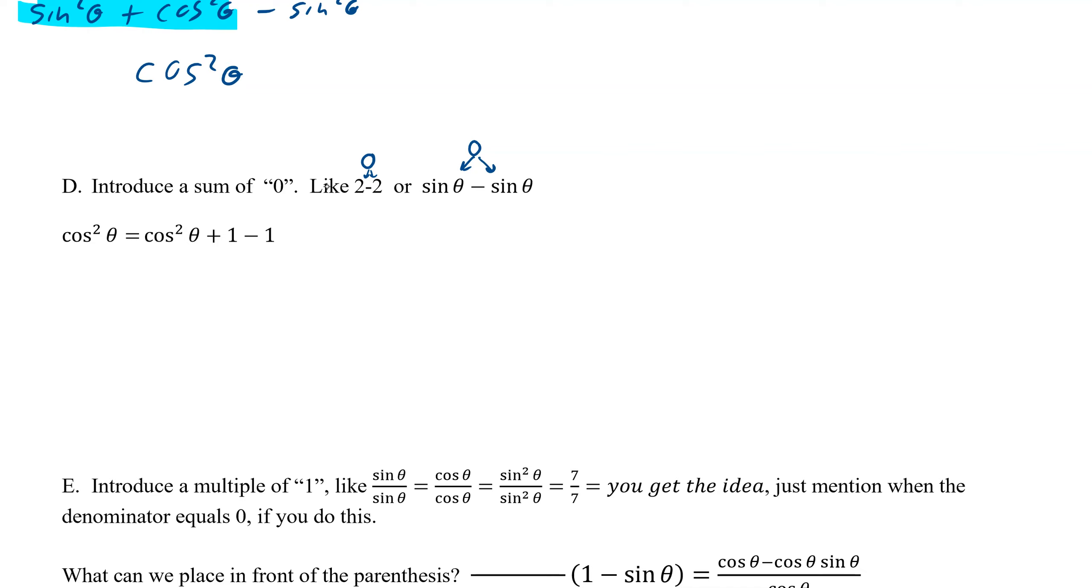If I wanted to introduce a 1 here with cosine squared theta, that would become cosine squared theta plus 1. But then if I put a plus 1, I have to put a minus 1, and everything now works. So now I have my 1, my negative 1, and my positive cosine squared theta that I could use a Pythagorean identity on.